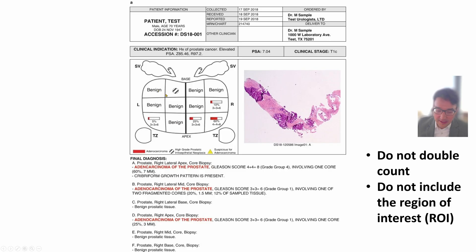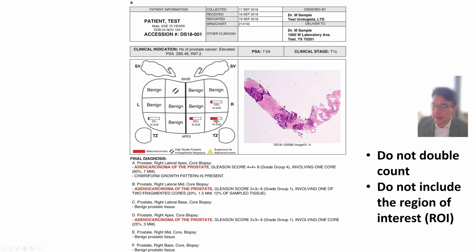Within each of these areas, they tell you what the result of the biopsy was. Areas marked as benign mean no cancer. The other areas are the cores that have cancer in them, shown as little bars representing the percent of each core that had cancer. In this case, 60% of the core had cancer in it. The pathologist is then asked about the aggressiveness of the prostate cancer, which is determined by the Gleason grade or Gleason grade group.